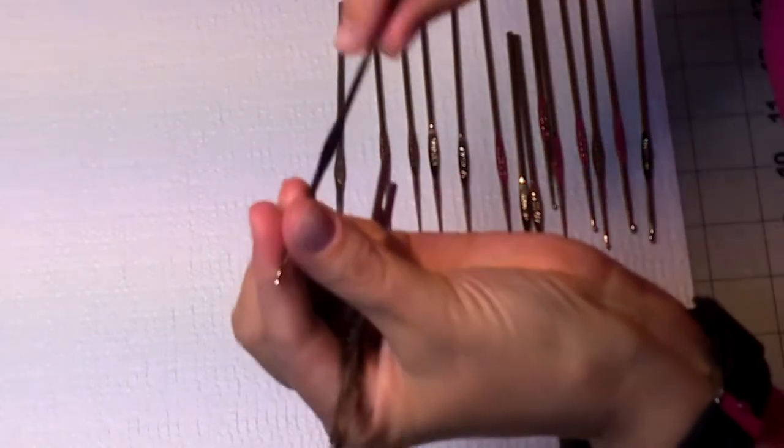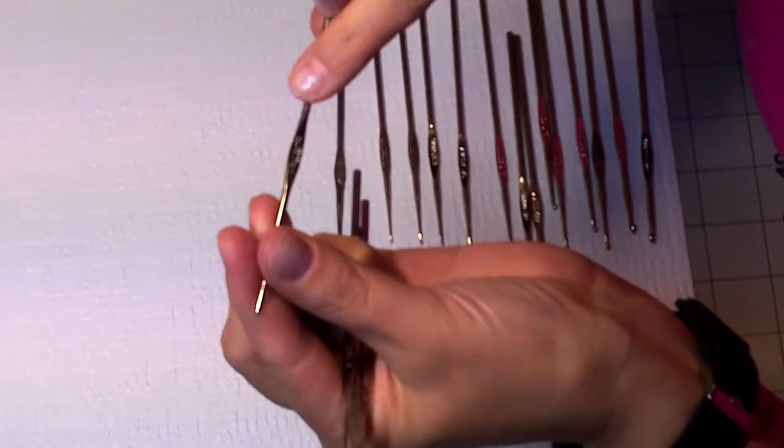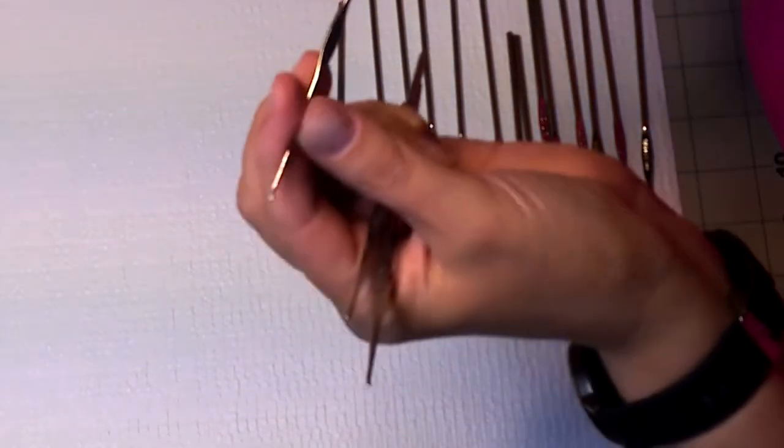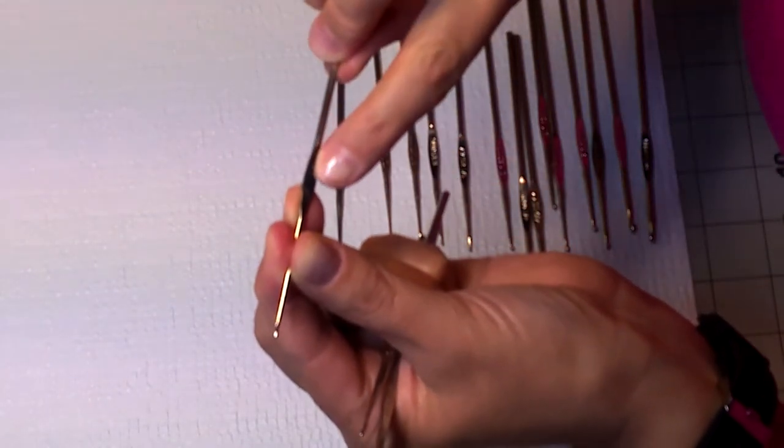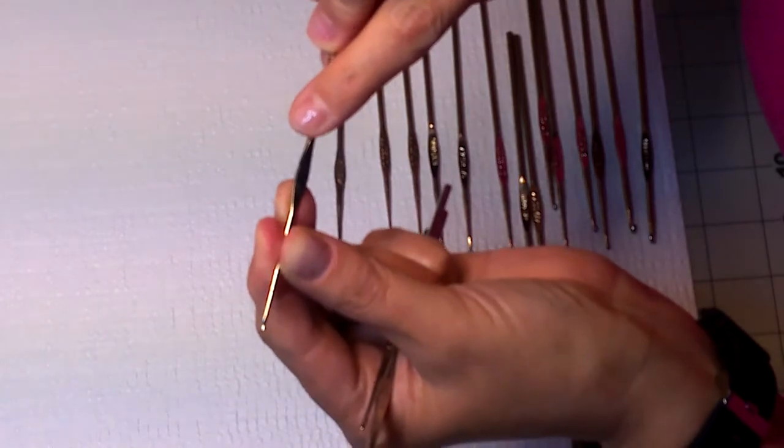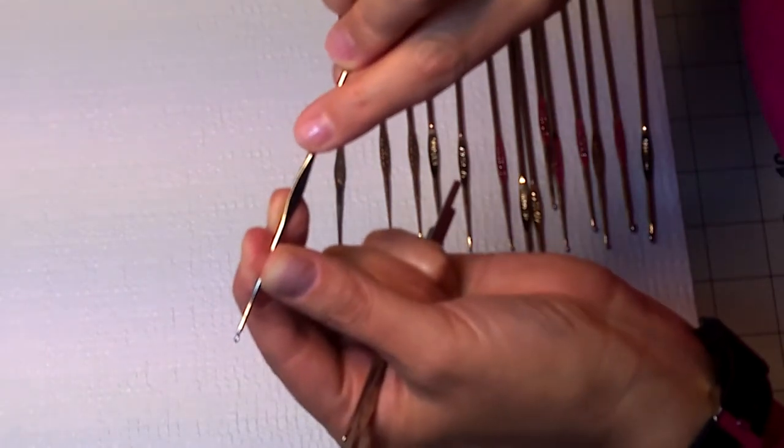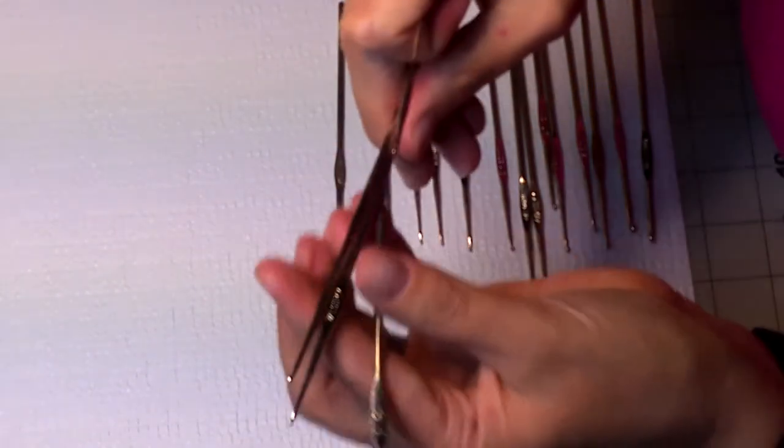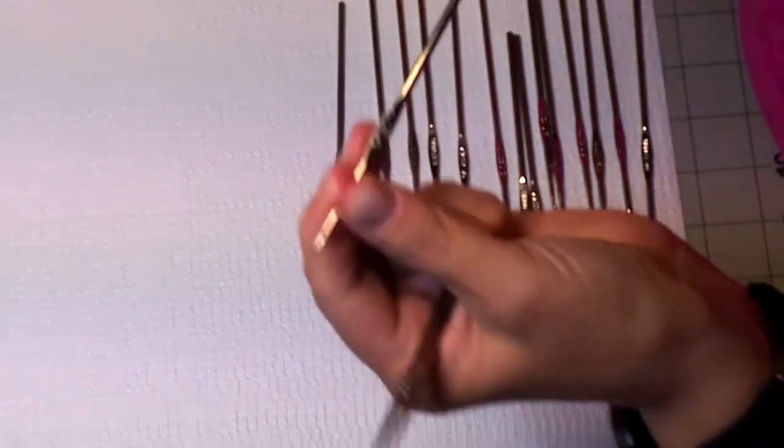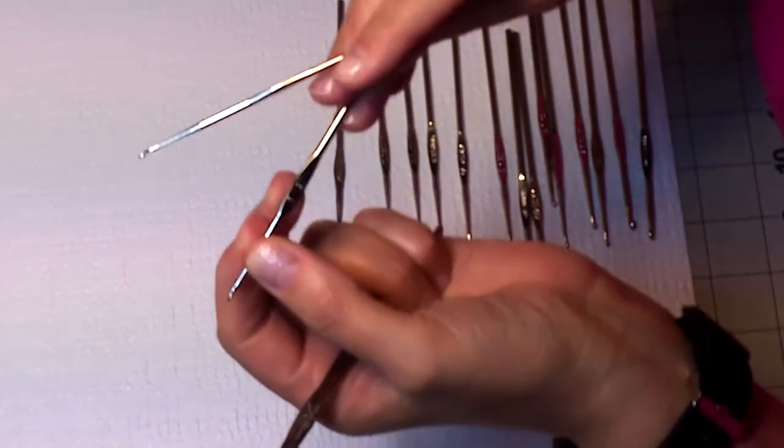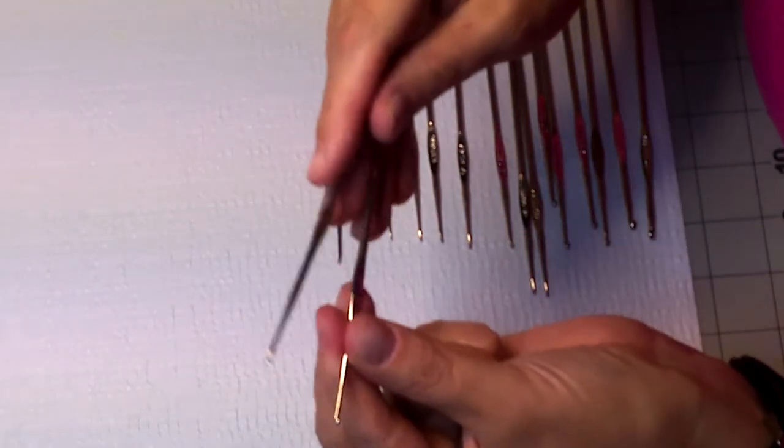Now this hook is another Susan Bates hook. It is also a size 5, but this brand is a 1.7 millimeter hook. The number 5 in the Boye brand is a 1.9 millimeter hook.